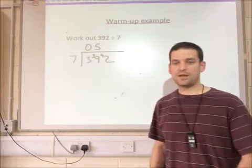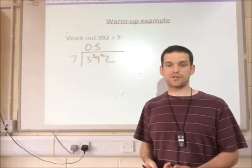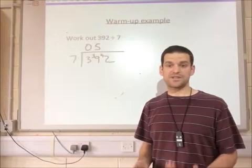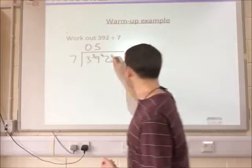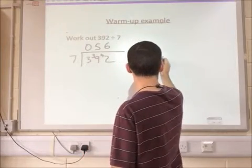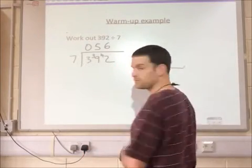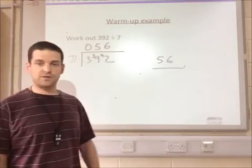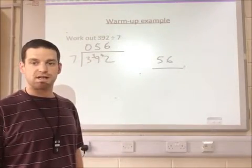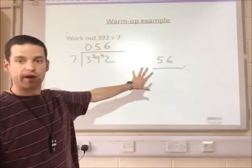And then finally, I need to know how many times seven goes into 42. The answer is six. Again, you need to know your times tables here. Seven times six is 42. And so we've now got the answer. 392 divided by seven gives us 56. So that's just so you can see the way that I'm setting it out.